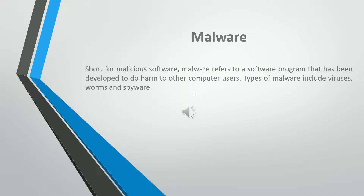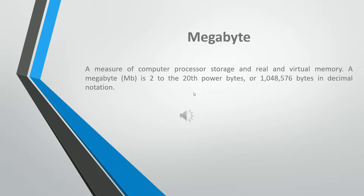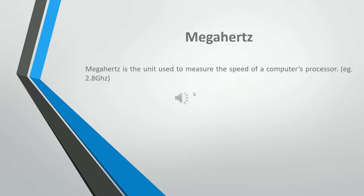Short for malicious software, malware refers to a software program that has been developed to do harm to other computer users. Types of malware include viruses, worms, and spyware. A megabyte (MB) is the measure of computer processor storage in real and virtual memory. A megabyte is 2 to the 20th power bytes, or 1,048,576 bytes in decimal notation. Megahertz is the unit used to measure the speed of a computer's processor, e.g. 2.8 GHz.